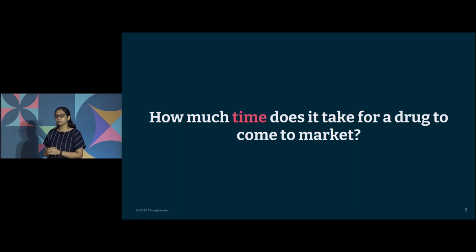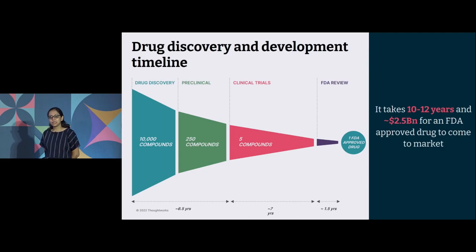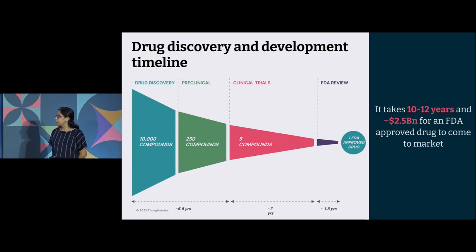A quick question before: how much time do you think it takes to get a drug to market? Any guesses? 18 months, that's the COVID world. 10 years, yes. So it takes really 10 to 12 years and approximately 2.5 billion dollars to get a drug to market. And that is the scale what we're talking about. It includes a lot of complexity, tediousness, and a time-consuming process.